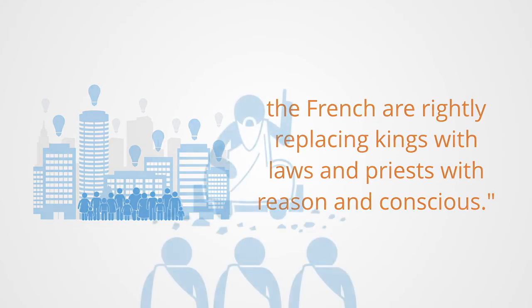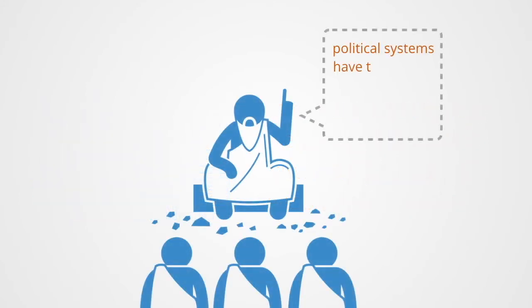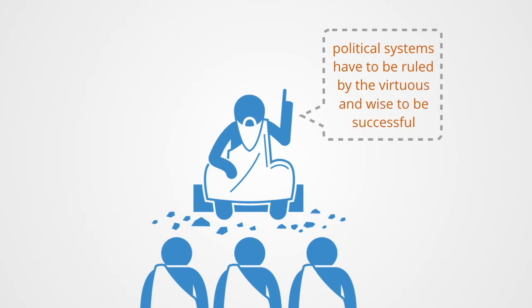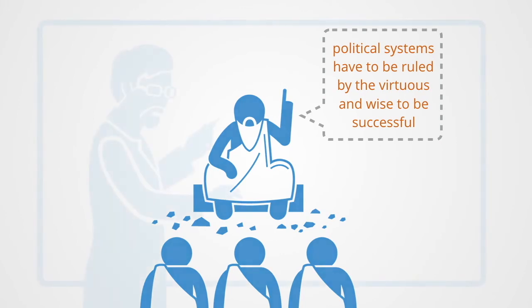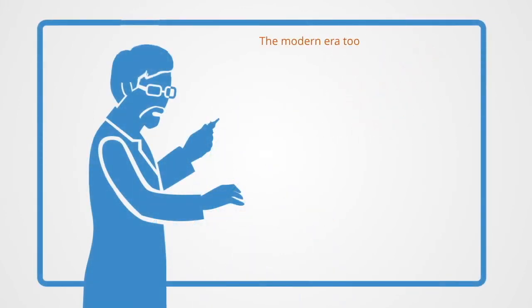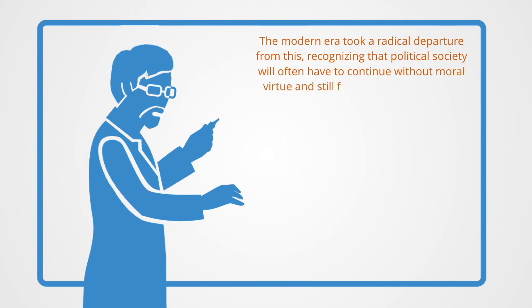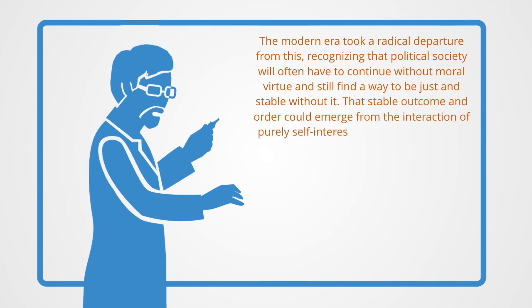From Plato through to the medievals, the idea that a just society could be constructed without virtuous rulers was incomprehensible. But to the ancients, the ethics of individuals could not be separated from the conduct of politics. From this perspective, political systems had to be ruled by the virtuous and wise if they were to be successful. The modern era, however, took a radical departure from this, recognizing the political society will often have to continue without moral virtue and still find a way to be just and stable without it—that stable outcomes and order could emerge from the interaction of purely self-interested individuals.